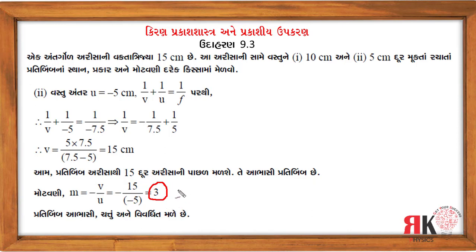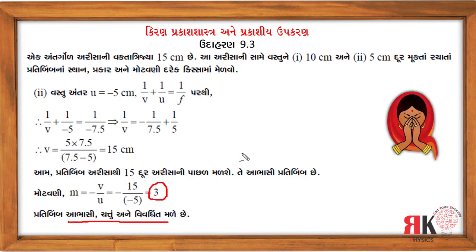પ્રતિબિંબ આભાસી, ચત્તું (erect) અને વસ્તુ કરતાં 3 ગણું મોટું (magnified) હશે. પ્રકાર: આભાસી ચત્તું. ઉદાહરણ નંબર 9.3.